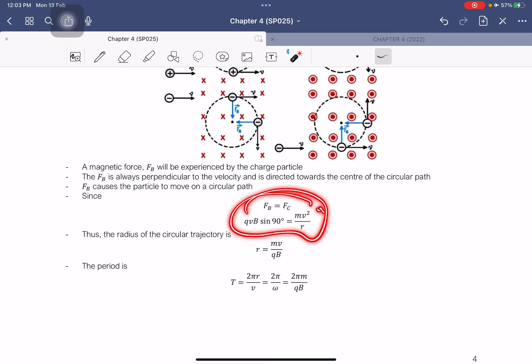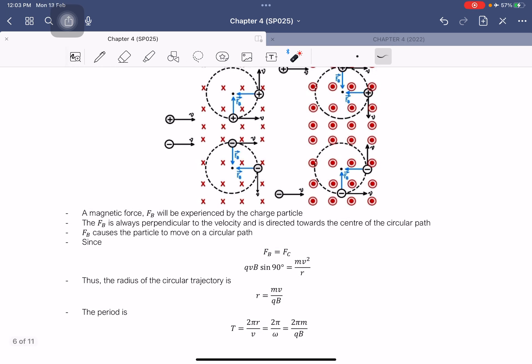This is how you get this formula. You just equate magnetic force to be equal to centripetal force. For the period, we can use this equation here.